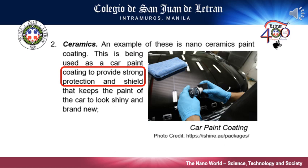Next, ceramics. Nanoceramics are a type of nanoparticle first discovered in the early 1980s. A good example is the nanoceramic paint coating, which is being used as a car paint coating to provide strong protection and shield to keep cars' paint shiny and to look brand new. Nanoceramic coatings are scientifically formulated solutions meant to penetrate microscopic imperfections, fill those gaps at the nanoscale, and provide a layer of protection that's nearly as strong as solid. Ceramic coating works by bonding with the existing surface to form a protective nanoceramic shield.